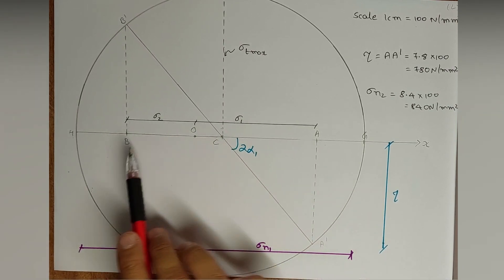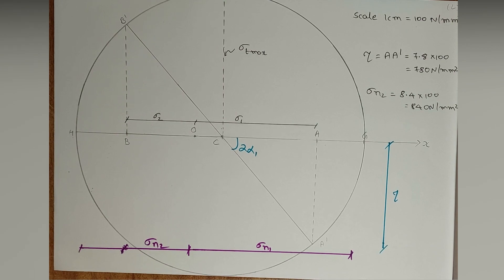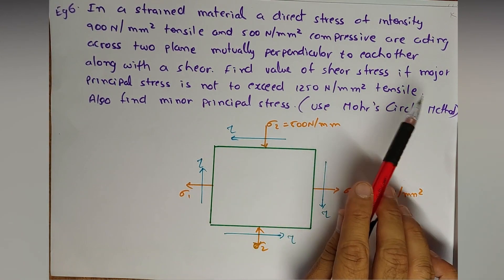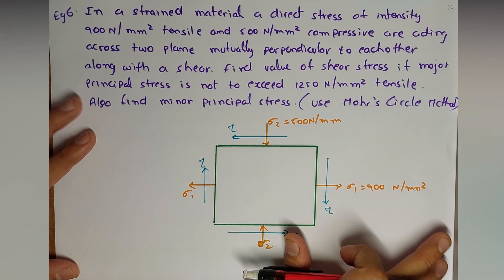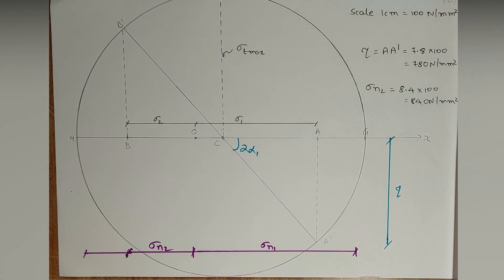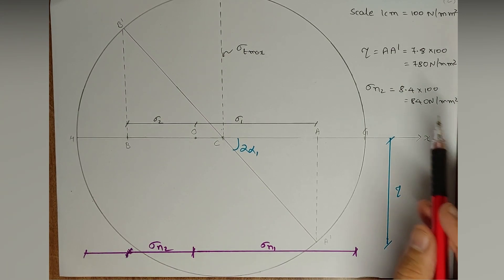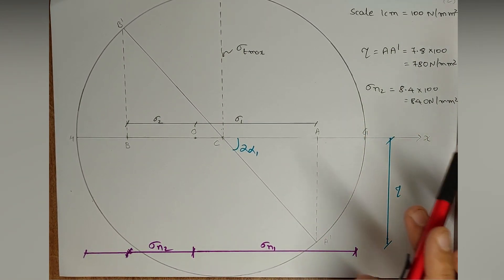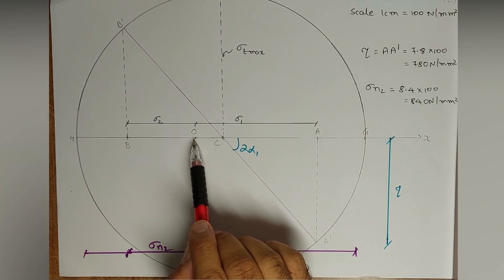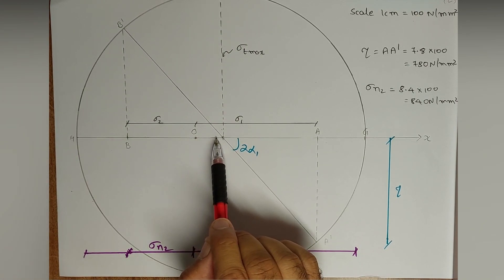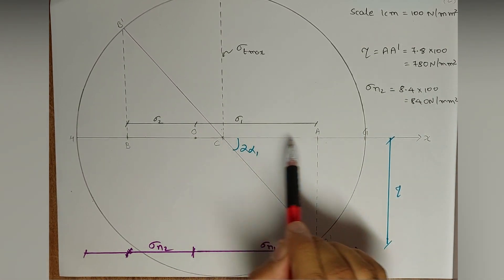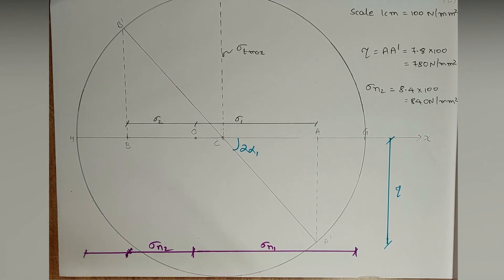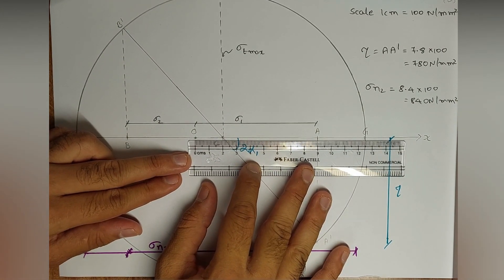Now the variation starts. We do not draw a circle with radius CA or CB this time. Since we need to find the shear stress and we are given that the major principal stress Sigma N1 must not exceed 1250 N/mm², we draw OG as 12.5 centimeters from O (since 1250 ÷ 100 = 12.5 cm). Measure O to G as 12.5 centimeters using a scale.